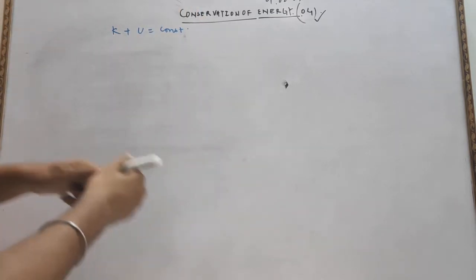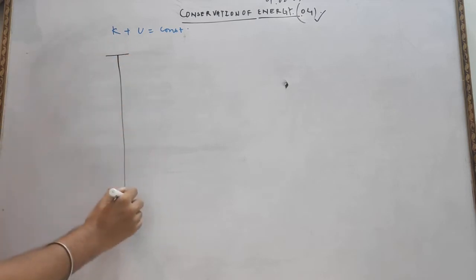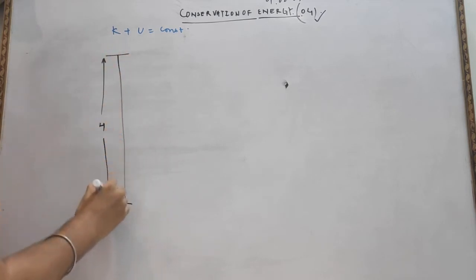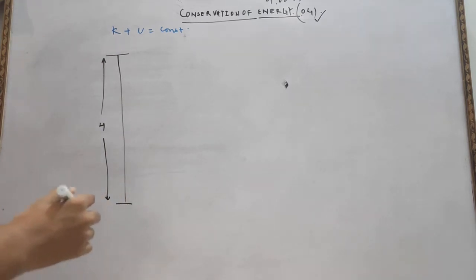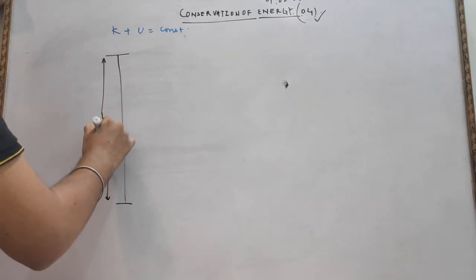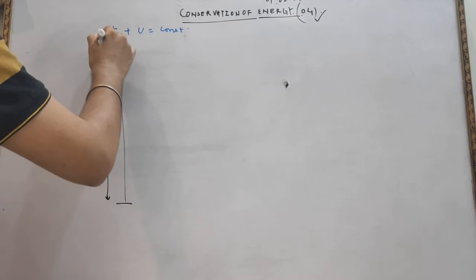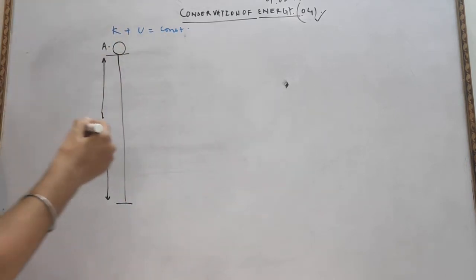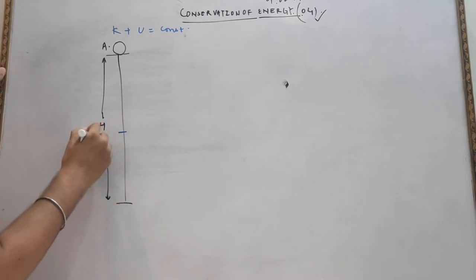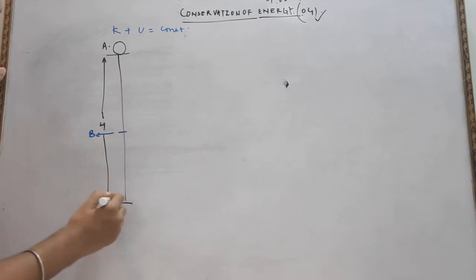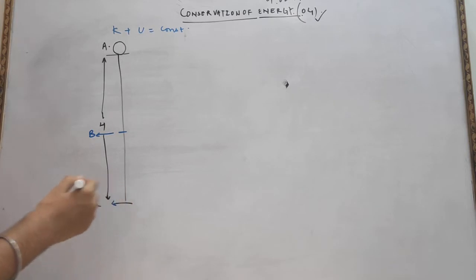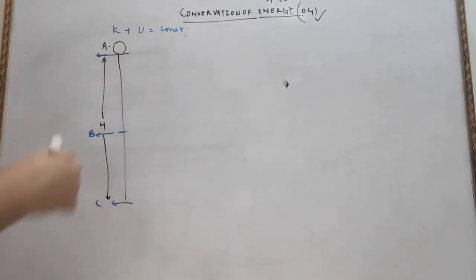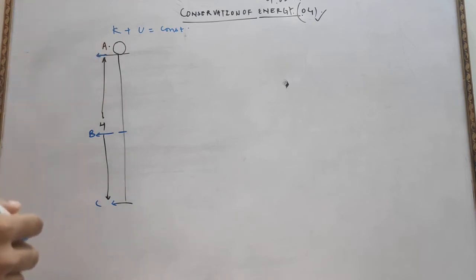For that purpose, suppose we have a body at an overall height h. The body is placed at point A, and we also have points B and C. At these three positions, we will determine the total energy of this ball.